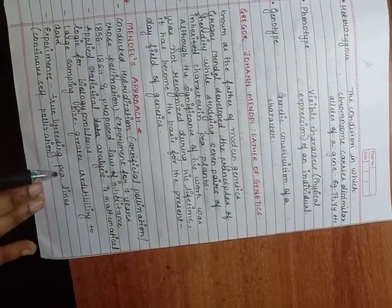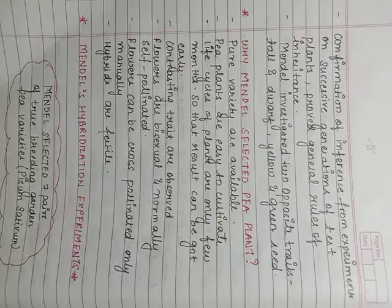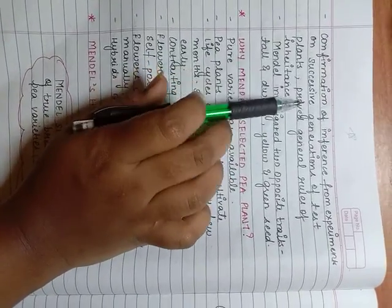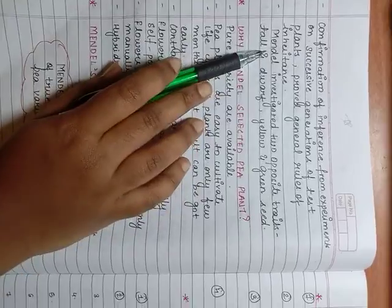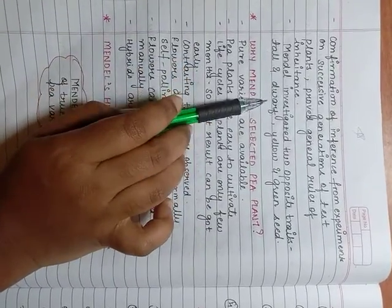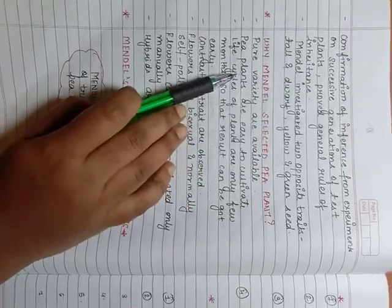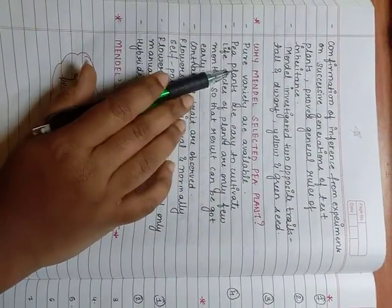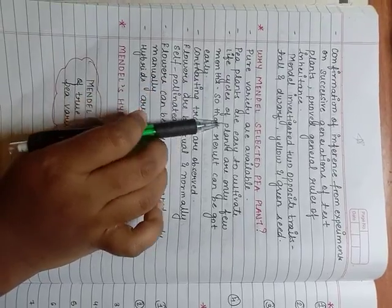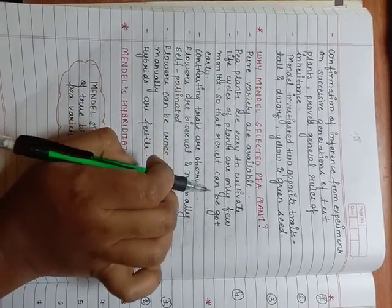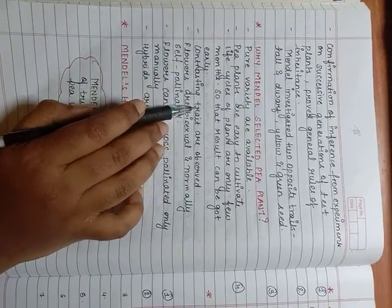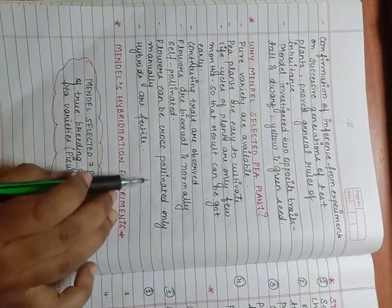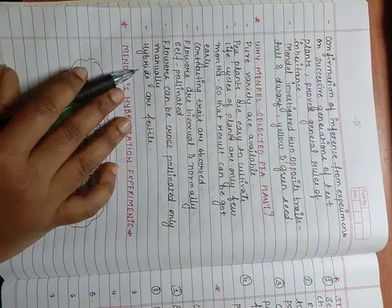Large sampling size gave greater credibility to data. Experiments using true breeding pea lines through continuous self-pollination. Confirmation of inference from experiments on successive generations of test plants proved general rules of inheritance. Mendel investigated two opposite traits, that is tall and dwarf, yellow and green seed. Why Mendel selected the pea plant? Because pure varieties are available. Pea plants are easy to cultivate. Life cycles of plants are only a few months so that the result can be got early. Contrasting traits are observed. Flowers are bisexual and normally self-pollinated. Flowers can be cross-pollinated manually. Hybrids are fertile.